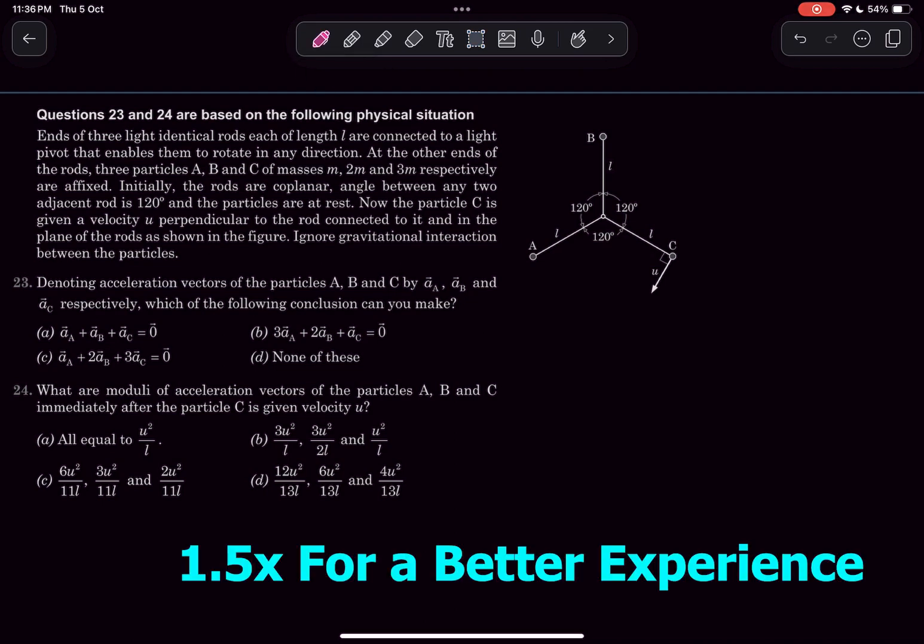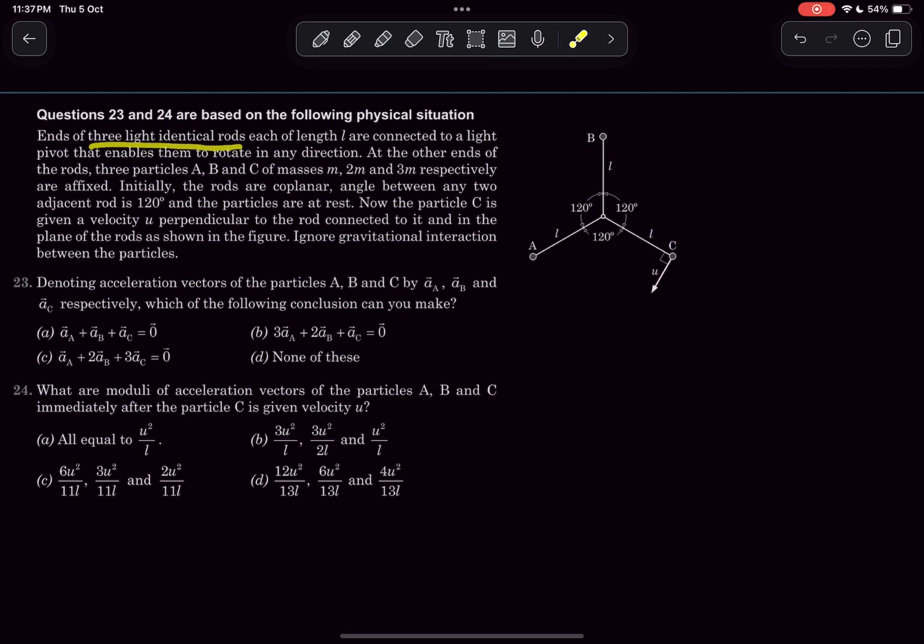Hello everyone, welcome back to my channel. In this video we'll be solving this problem from Pathfinder MCQs from the chapter of impulse and momentum. So let's read the problem statement. We have three light identical rods, each of whose length is l, and they're connected to a light pivot that enables them to rotate in any direction.